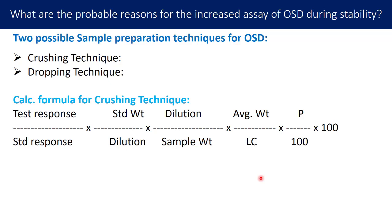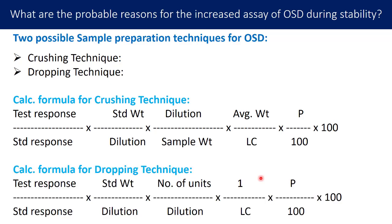The calculation formula used in the crushing technique has three important terms: sample weight, average weight, and label claim. I will talk about the relevance of these three terms in deciding the probable reasons for increase in assay. In the dropping technique, a different calculation formula applies.